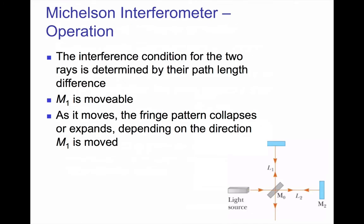The condition for maxima and minima in the pattern depend on the path length difference between the rays. The thing about this interferometer is that one of the mirrors is movable, so that the path length difference can be changed by turning a knob.